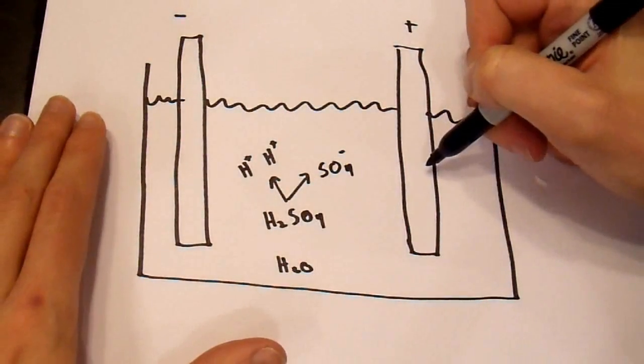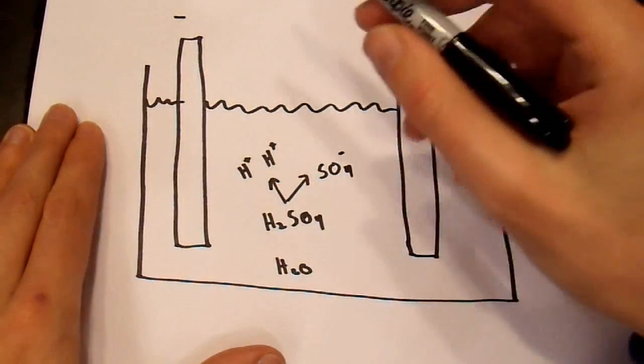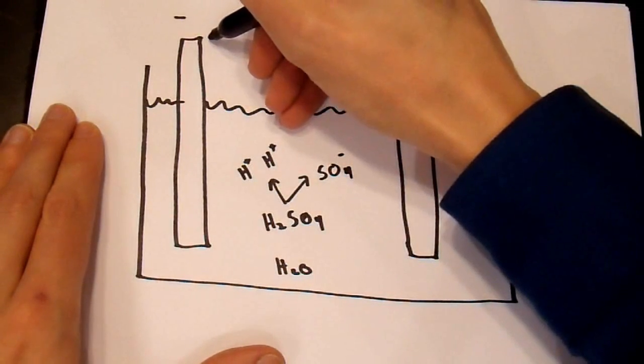this positive electrode is not actually made of lead. It's made of lead dioxide. And, the negative terminal is just made of ordinary, soft, porous lead.